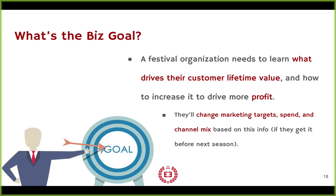The business goal — we're going to tie it right back from the beginning. What were we supposed to do? The goal sheet had a row that said: the festival needs to learn what drives their customer lifetime value and how to increase it to drive more profit. Not just what's behind customer lifetime value, but how to increase it profitably. They said they will change marketing targets, marketing spend, and the marketing channel mix based on this information if they can get it before the next season.